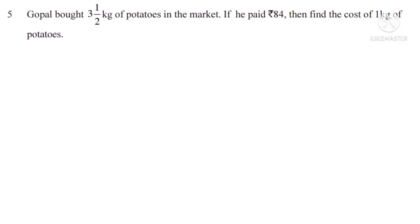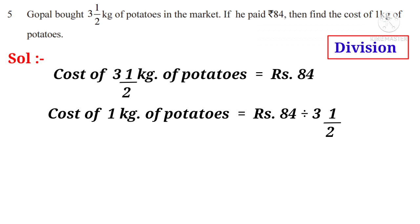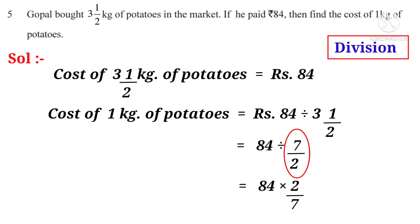Problem 5: Gopal bought 3 and a half kilograms of potatoes and paid 84 rupees. Find the cost of 1 kilogram. The weight reduces from 3½ kg to 1 kg, so we use division. Cost of 3½ kg = 84 rupees. Cost of 1 kg = 84 ÷ 3½. Convert 3½ to improper fraction: 2 × 3 + 1 = 7/2. So 84 ÷ 7/2 = 84 × 2/7. On simplification by 7, that is 12 × 2 = 24 rupees per kilogram.